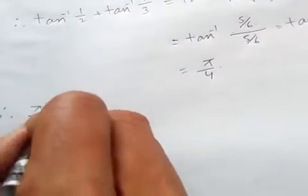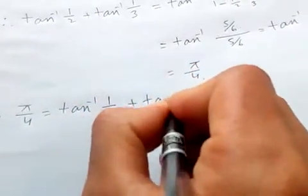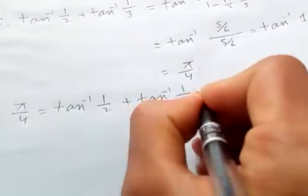Therefore pi over 4 is same as tan inverse of 1 by 2 plus tan inverse of 1 by 3.